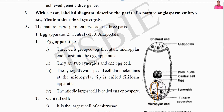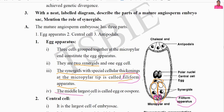So these two are the synergids and this one is the egg cell. The synergids have special cellular thickenings at the micropylar tip called the filiform apparatus. Towards the micropylar end there are finger-like projections at the mouth of the synergids — these are called the filiform apparatus. The filiform apparatus may help to attract the pollen tube towards the egg cell. The middle largest cell between the synergids is the egg cell.